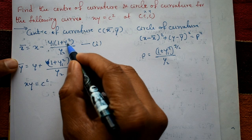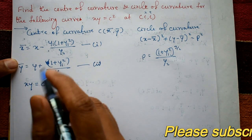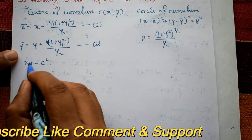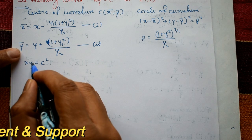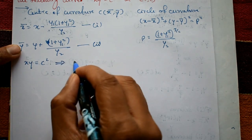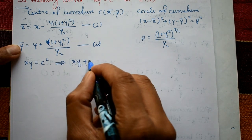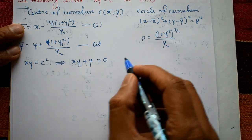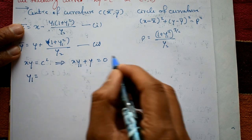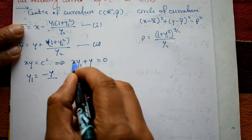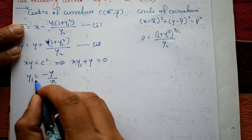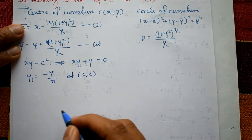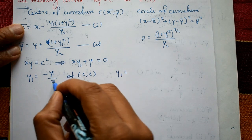Given curve is xy = c². We need y1 (first derivative) and y2 (second derivative). Differentiating xy = c² using the product rule: x·y1 + y = 0, so y1 = −y/x. At point (c, c), y1 = −c/c = −1.